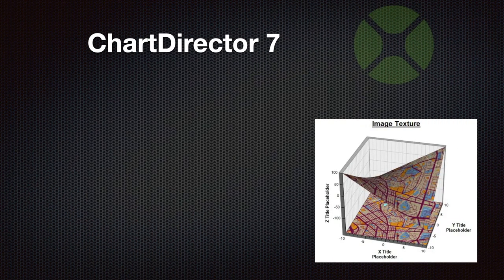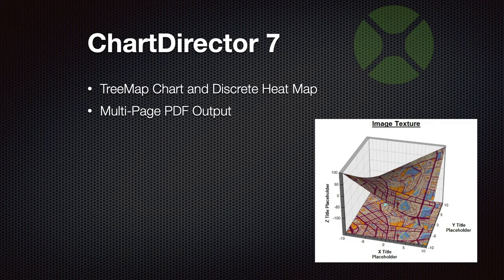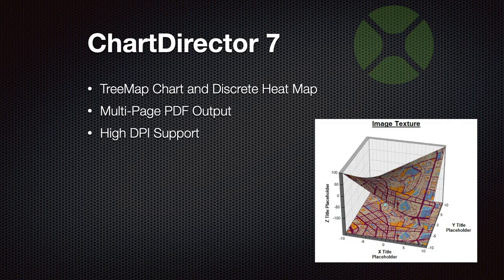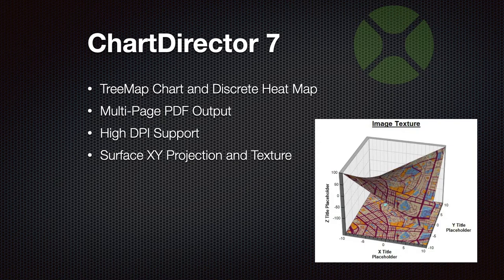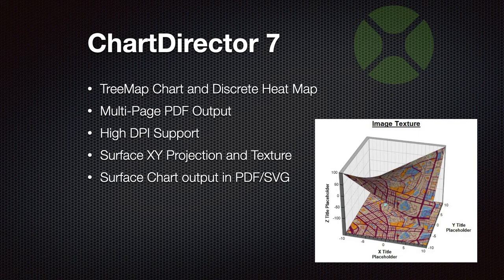In the last year we updated to ChartDirector 7, a new version with the new chart types mentioned but also extensive PDF support, so you can have charts output as a multi-page PDF document. You can use our DynaPDF plugin to work on these PDF documents — putting them together with other text and tables, and placing your charts in an existing PDF document. We got better support for high DPI so you get two times the resolution for screen or four times for printing. The surface chart got an XY projection and there's a texture option, and output to PDF and SVG is much improved to use more vector graphics instead of just bitmaps.